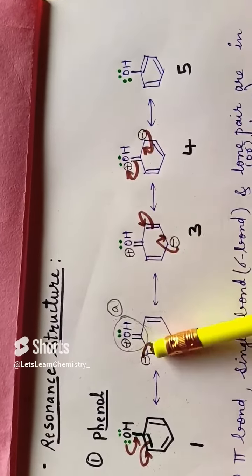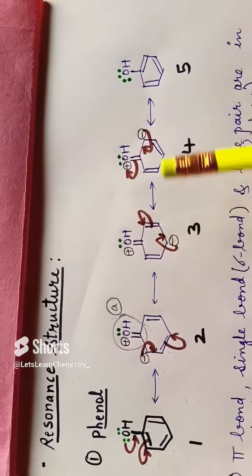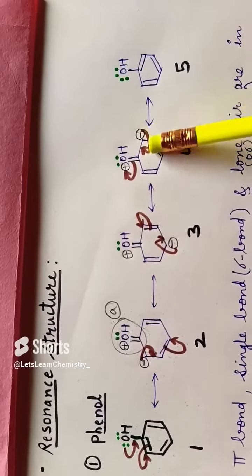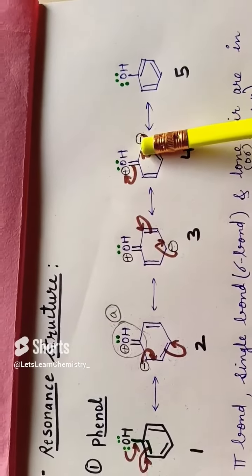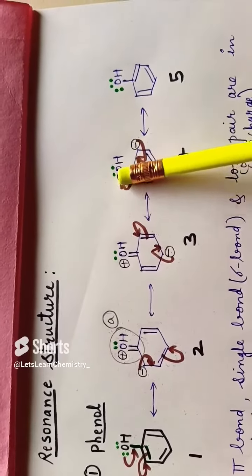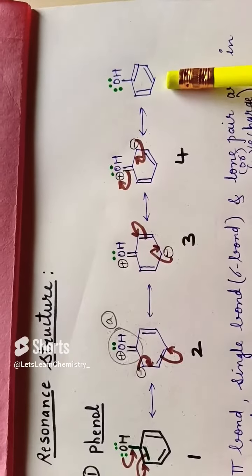Two electrons shift to form a negative charge. This goes like this and neutralizes the positive charge, and we get this structure.